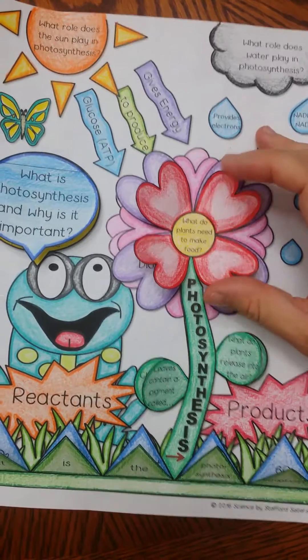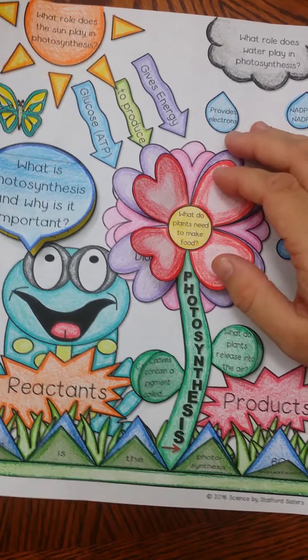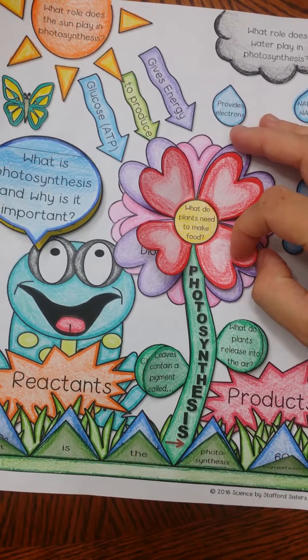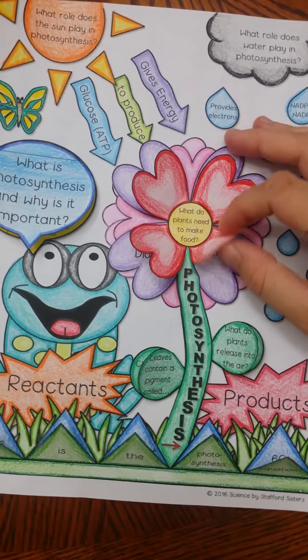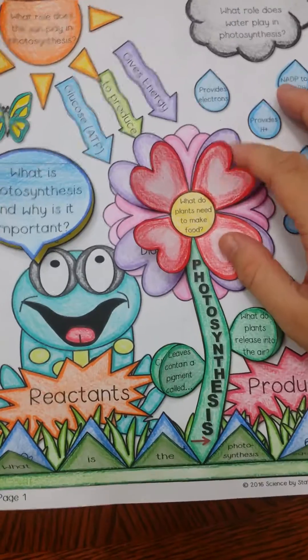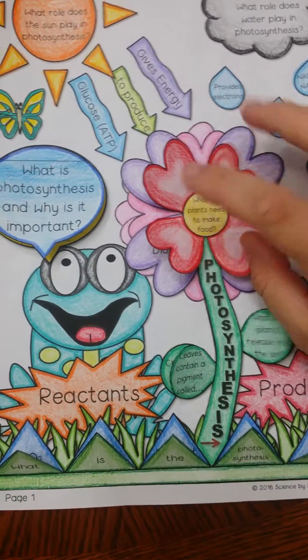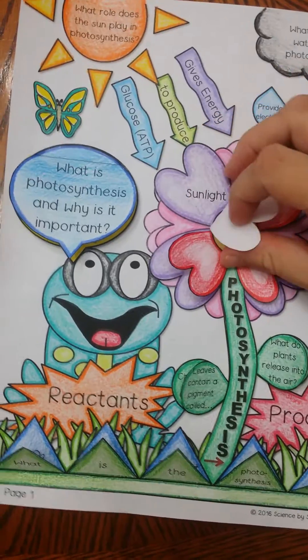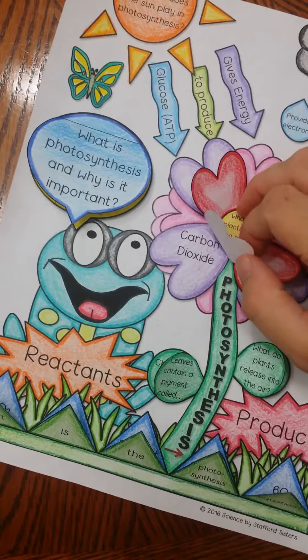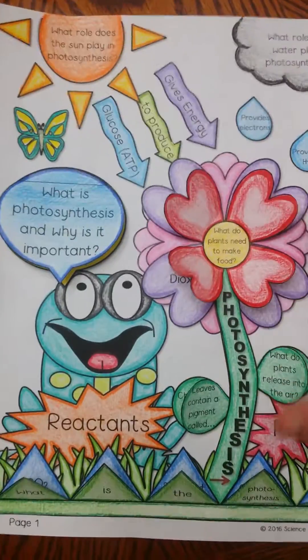Also, the rose petals fold up. It says: what do plants need to make food — nutrients, water, sunlight, and carbon dioxide.